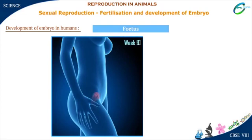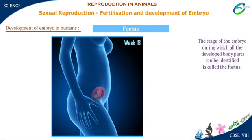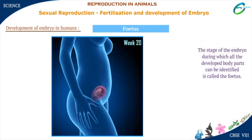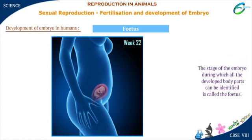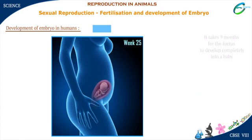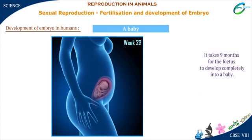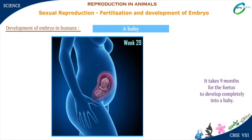The embryo gradually develops body parts such as hands, legs, nose, ears, and eyes. The stage of the embryo during which all the developed body parts can be identified is called the fetus.